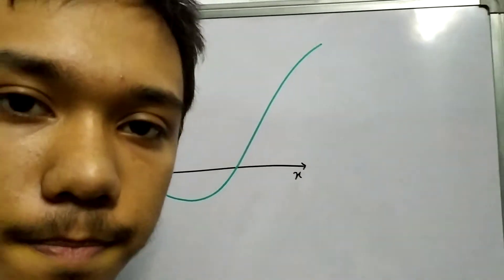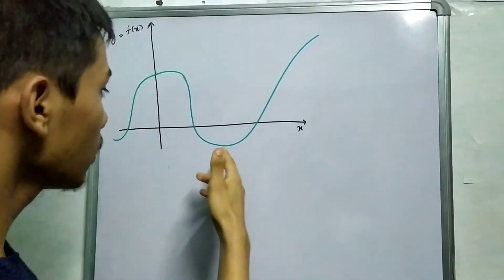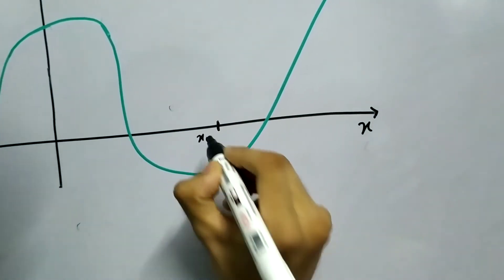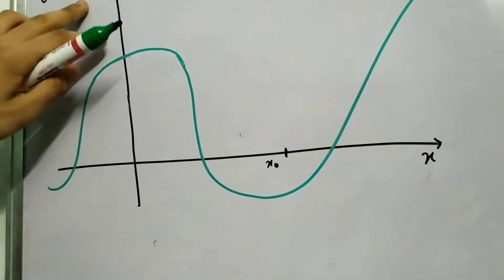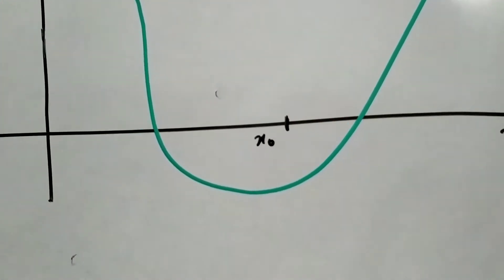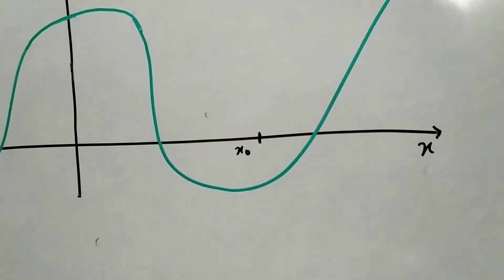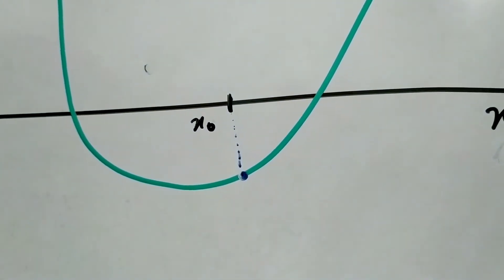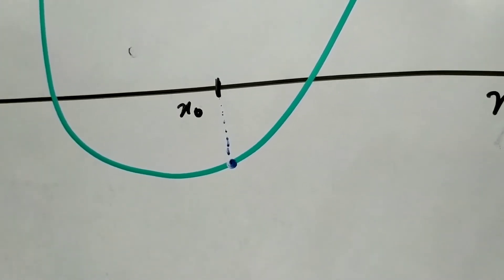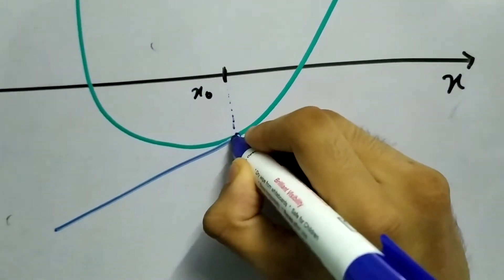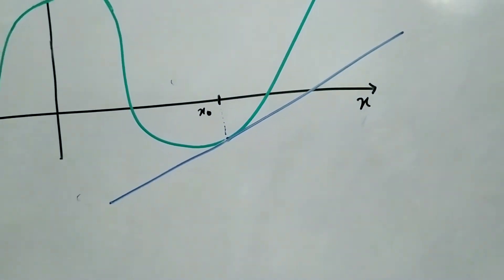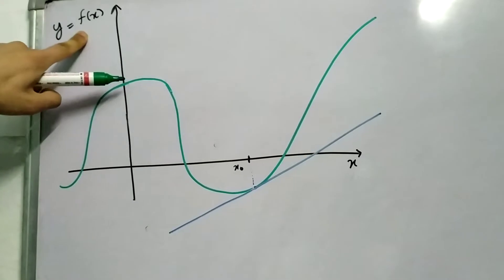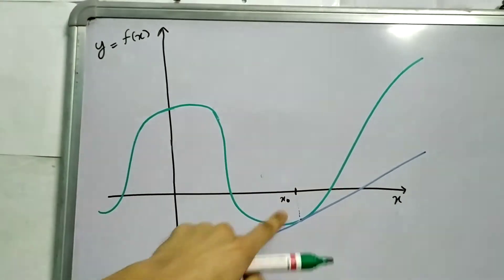So we talked about slopes, and today we'll be seeing what is the slope at any general point. Let me call this point x naught. What is the slope of this function f(x) at x naught? The slope changes. What we do is we drop a line — this is our point — and then we make a tangent right at this point, something like this. The slope of this tangent line is the slope of f(x) evaluated at x = x naught.